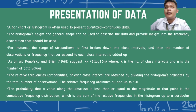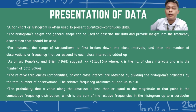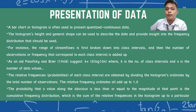The relative frequencies of each interval are obtained by dividing the histogram coordinate by the total number of observations. The relative frequency ordinates add up to 1.0. The probability that a value is less than or equal to the magnitude at a given point is the cumulative frequency distribution, which is the sum of the relative frequencies up to that particular interval.